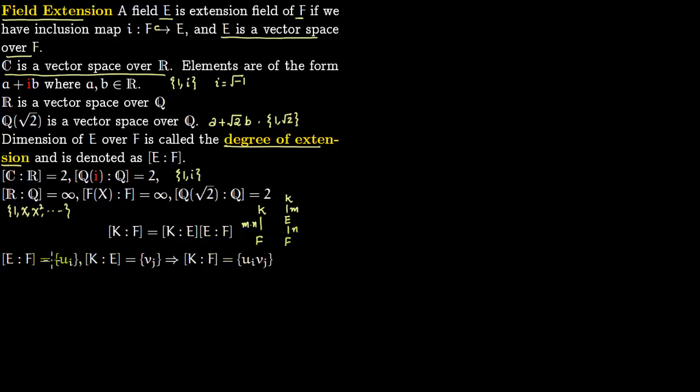The proof is very simple. Say [E:F] is generated by this vector space {uᵢ}, dimension is n. [K:E] is generated by a bunch of these vectors {vⱼ}, dimension is m. Then [K:F] is generated by the vectors of the form uᵢ·vⱼ, which is m times n.